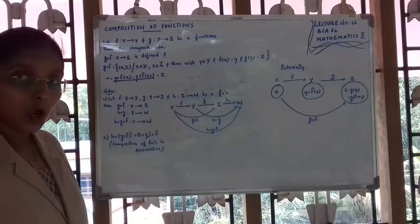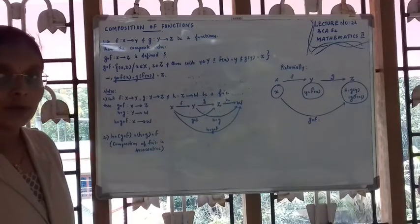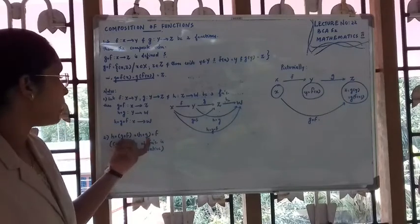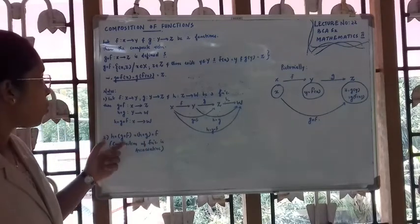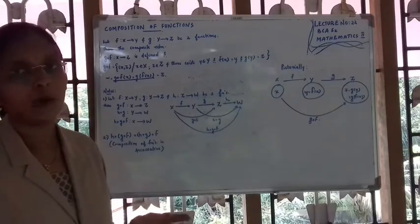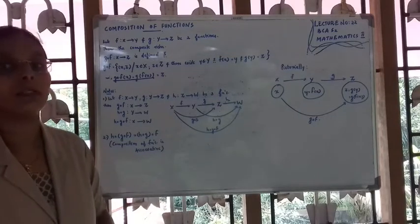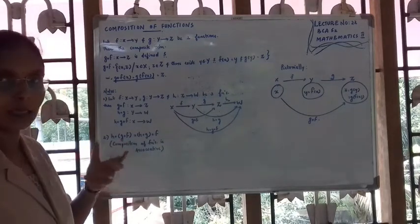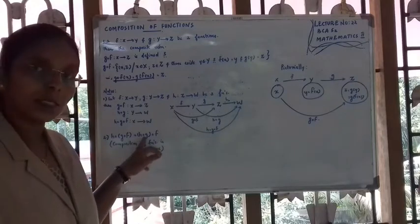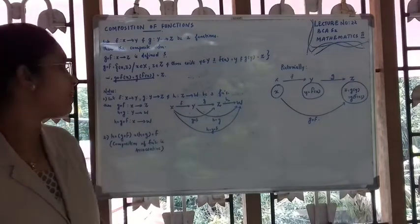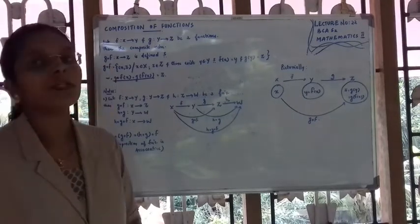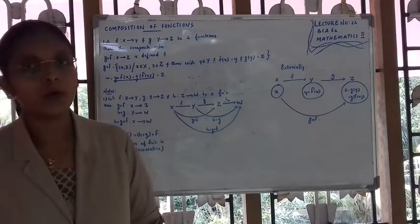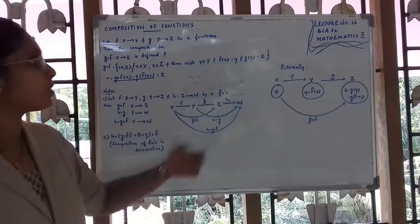H composite G composite F will be equal to H composite G composite F. That is, composition of functions is also associative — that is the associative property. Composition of functions is also associative. This is the composition of the composition we have — this is the theory part.